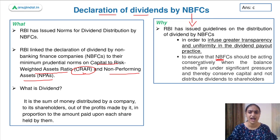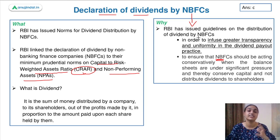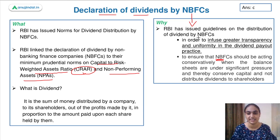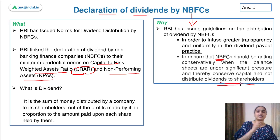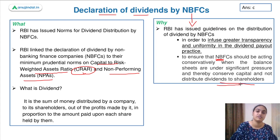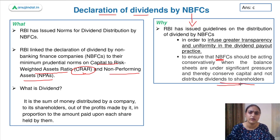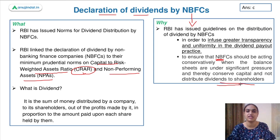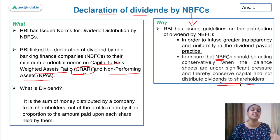Suppose there is an NBFC whose balance sheet is under significant pressure and it won't be able to deal with stressed situations — in that case, the company should conserve capital rather than declaring dividends. We saw recently that during Covid, RBI allowed banks like HDFC to declare less or no dividends, because banks need to be resilient and have enough capital to deal with stressed situations. This requirement applies to NBFCs as well.